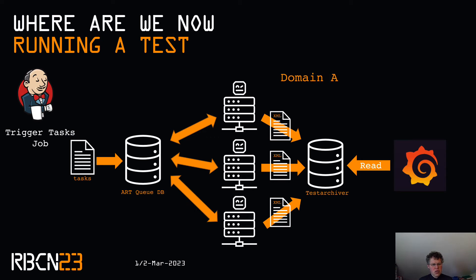How does it work — running a test? In Jenkins we have defined three different task jobs at the moment: one to run the regression test, one to run a single use case, and one to run several use cases. Those tasks are stored in the RTQ database, and the Robot Framework servers running the RTQ look into that database and check if a task is available for them. If a task is available, it is picked up. When the run is completed, the XML is stored into TestArchiver, which processes it and puts it in its database. Grafana looks in the TestArchiver database and presents the graphics. The report generated by Robot is also available for the user through Grafana, via a link to central storage.